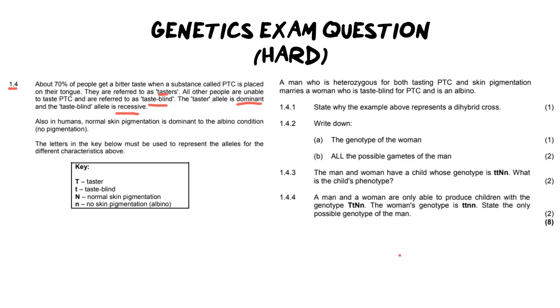So essentially if you can taste the bitter taste you have a dominant allele. If you can't you have two recessive. It also goes on to say that in humans normal skin pigmentation is dominant whereas the albino condition where no pigmentation is not. In other words albinism is recessive. And they've given us the letters in a key used to represent the alleles. Now they say that it must be used which means that you can only use these letters. You can't come up with your own and if you do use your own you run the risk of getting the question wrong. This also gives us some lovely clues as to which of these particular traits are dominant and recessive even if we weren't so clear in the beginning of the paragraph.